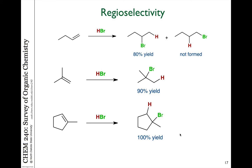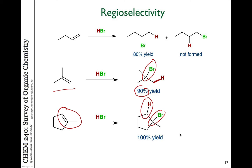We can see this also occurs with propene reacting with HBr — again, 90% yield of a product where hydrogen adds to the least substituted carbon and bromine attaches to the most substituted carbon. Same thing with methylcyclopentene: when methylcyclopentene reacts with HBr, bromine goes on the more substituted carbon and hydrogen on the least substituted carbon. This is a general trend seen in all of these electrophilic addition reactions with hydrogen halide.